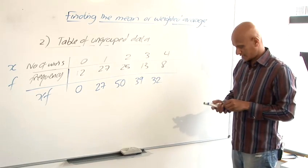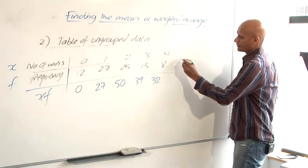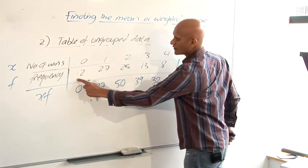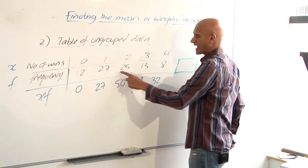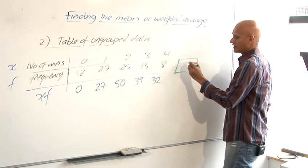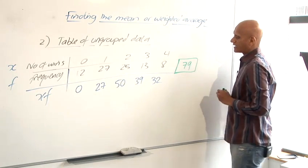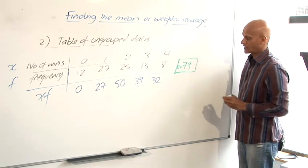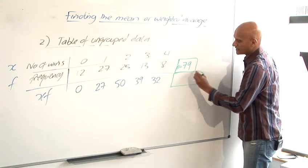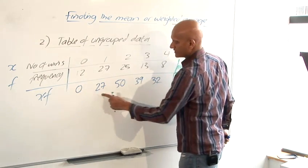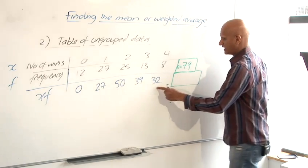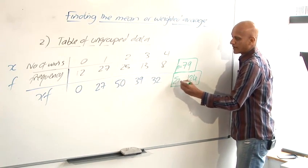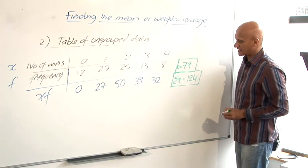Once we've done that, we're going to total up the frequencies. So adding up all of these frequencies, maybe just sticking it in the calculator, will give you an answer of 79. And I'm going to call that n. So n equals 79. And then I'm going to add up all of these. Adding up all of these, again on the calculator, gives you a total of 124. And I'm going to call that sigma x, the sum of all the x's.